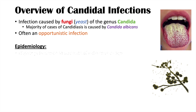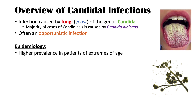Regarding the epidemiology of these infections, there is a higher prevalence in patients at extremes of age — individuals who are very young, such as small children, and individuals who are very old, such as elderly patients. This relates to immune system functioning. In younger patients, the immune system hasn't fully developed yet, and in elderly patients, the immune system starts to weaken, increasing risk for candida infections.